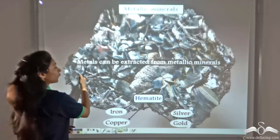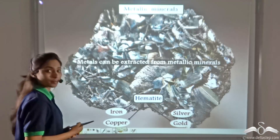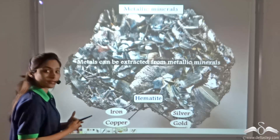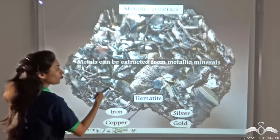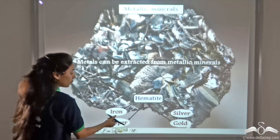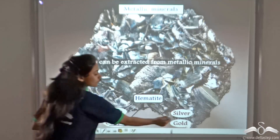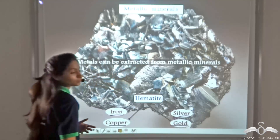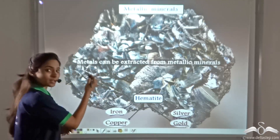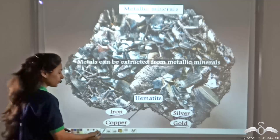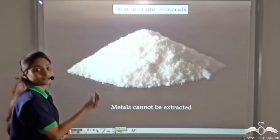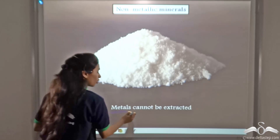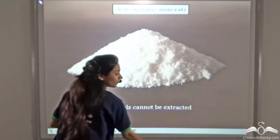Metals can be extracted from metallic minerals — that is why they are given that name. From hematite, we can obtain iron, copper, silver and gold. From non-metallic minerals, you cannot obtain any metals.